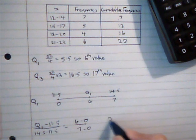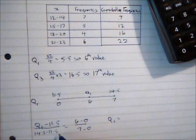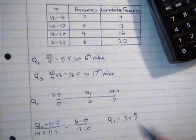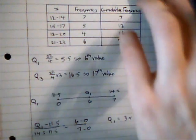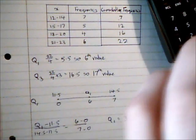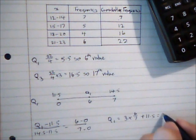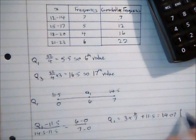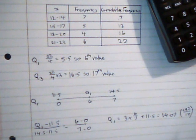So then from here I can work out that Q1 is equal to, so 14.5 minus 11.5 is 3, so then I can multiply that up. So 3 multiplied by 6/7, add 11.5. So that gives me a value of 14.07. And I'm just going to write down the exact value as well, so that was 197 over 14. Just because it's going to be better when I actually calculate the interquartile range to use the exact value.